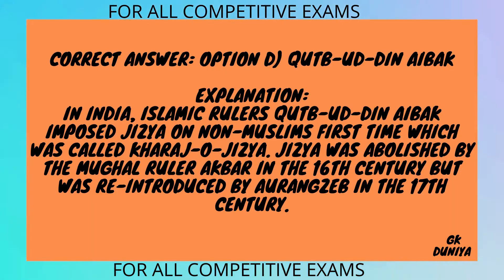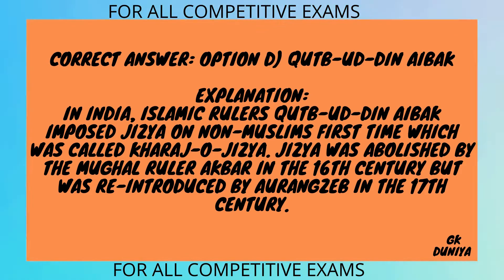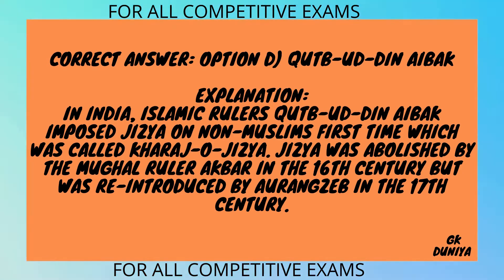Correct answer: D. Qutbuddin Aibak. Explanation: Islamic ruler Qutbuddin Aibak imposed Jizya on non-Muslims for the first time in India, which was called Dharaj-e-Jizya. Jizya was abolished by the Mughal ruler Akbar in the 16th century but was re-introduced by Aurangzeb in the 17th century.